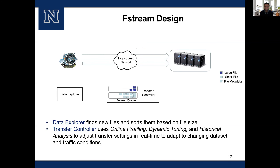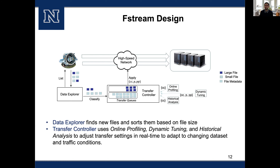Here is the architecture of FC Stream. It has two components: a data explorer and a transfer controller. The data explorer periodically checks the source to find new files and passes them to the transfer controller. The transfer controller uses several components to predict the optimal values of transfer parameters and apply them to the transfer to keep throughput high at all times. It does this periodically so that when new files arrive or background traffic changes, it makes adjustments to the transfer settings to ensure throughput is always at the expected level.